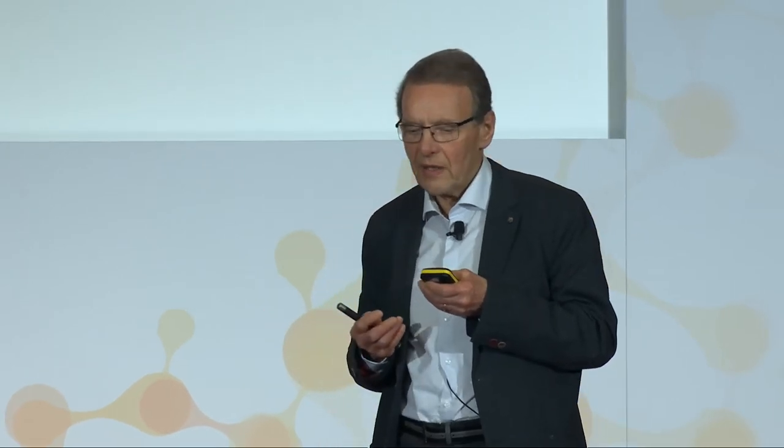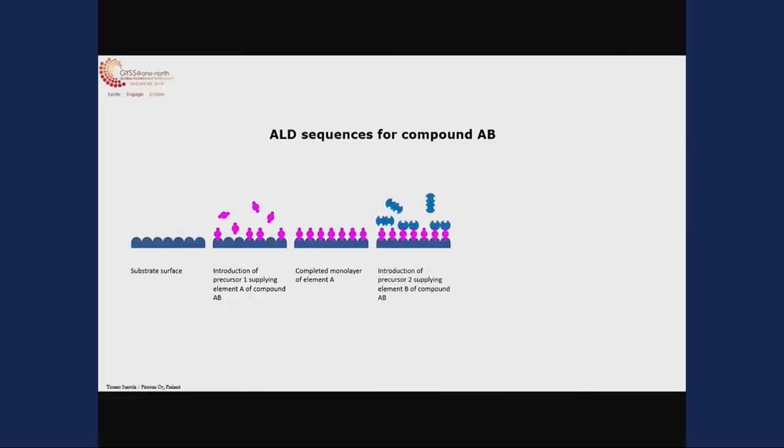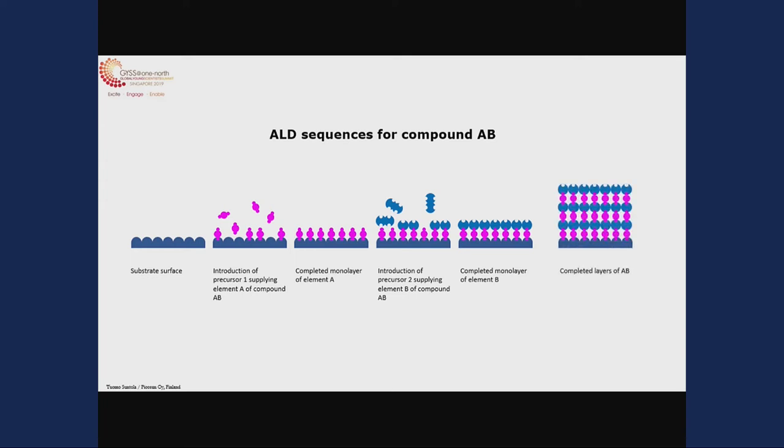Instead of controlling the flux intensity, we are simply counting the number of reaction steps we are introducing — that gives the final thickness of the material. So we can make very strictly defined thicknesses, even over a few atomic layers, which today are needed in advanced devices. This demonstrates how we first form the first layer. The picture is highly simplified because nature doesn't work exactly that way in the first layer — there are certain surface reconstructions — but the essential thing is that we still get the saturation.